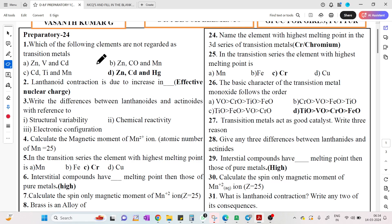This is a preparatory examination from a different district. The question is: which of the following elements are not regarded as transition elements? Definitely the answer is zinc, cadmium, and mercury - these are not considered transition elements.